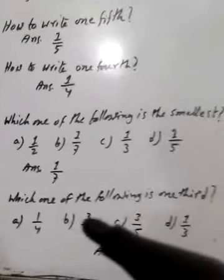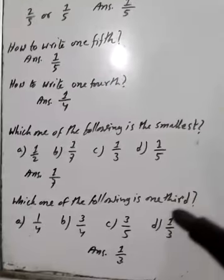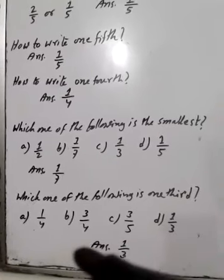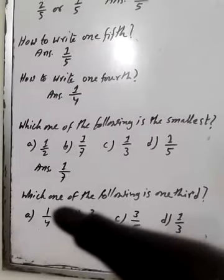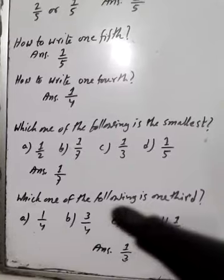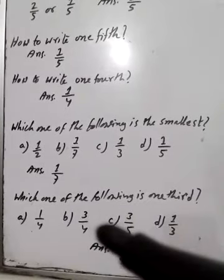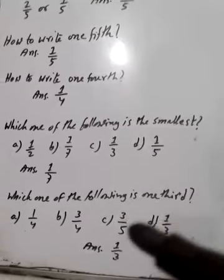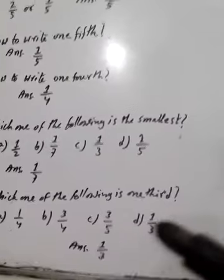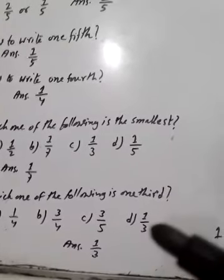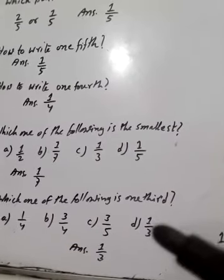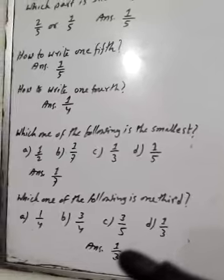Which one of the following is 1 third? This is 1 by 4 — one fourth. This is 3 by 4 — three fourth. This is 1 by 5 — one fifth. This is 1 by 3 — one third. So 1 by 3 is one third.